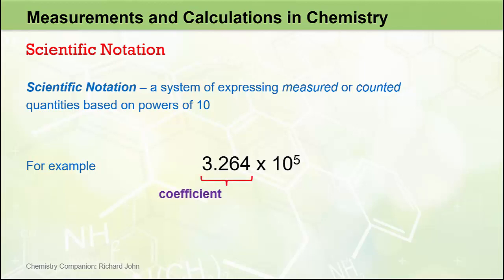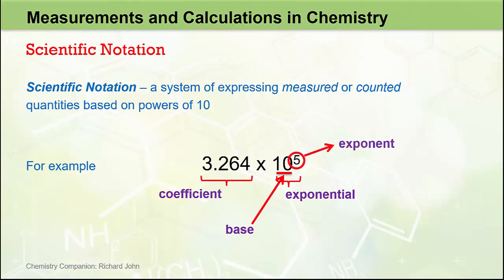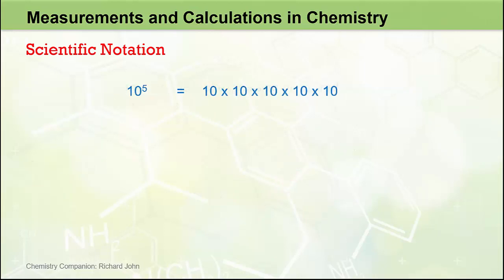The 3.264 is called the coefficient of the number, and the 10 to the 5 is the exponential part of the number. More specifically, the 10 is the base of the exponential, and the 5 is called the exponent. The exponential 10 to the 5 actually means 10 multiplied by itself 5 times: 10 × 10 × 10 × 10 × 10, corresponding to the exponent 5.